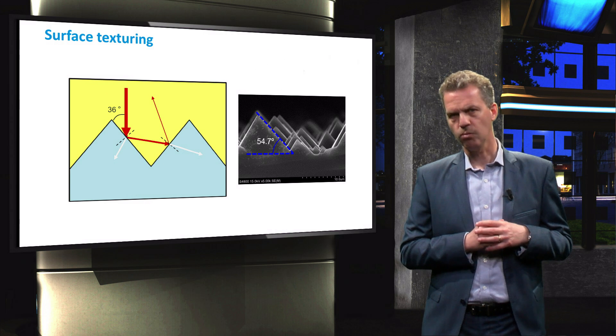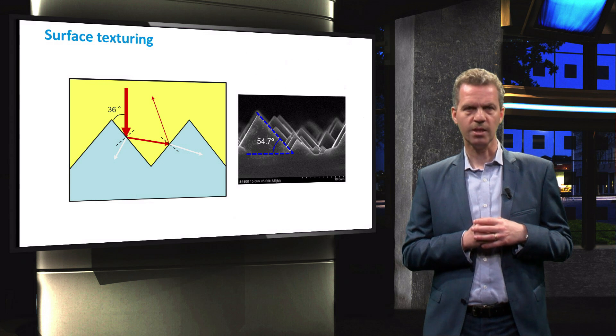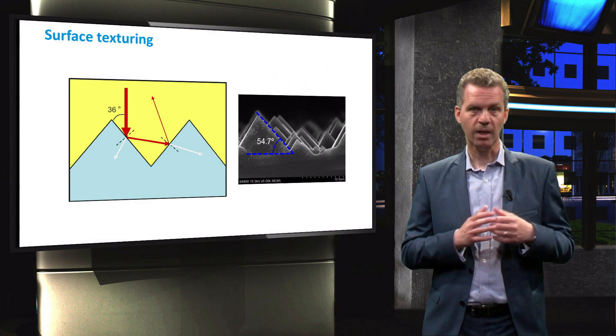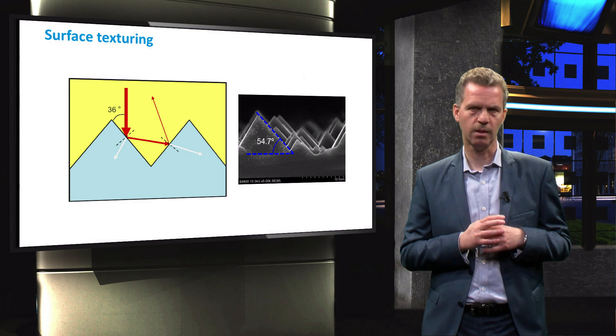Note that this wet etching method requires a very precise orientation of the silicon wafer, which makes it very effective for monocrystalline silicon.